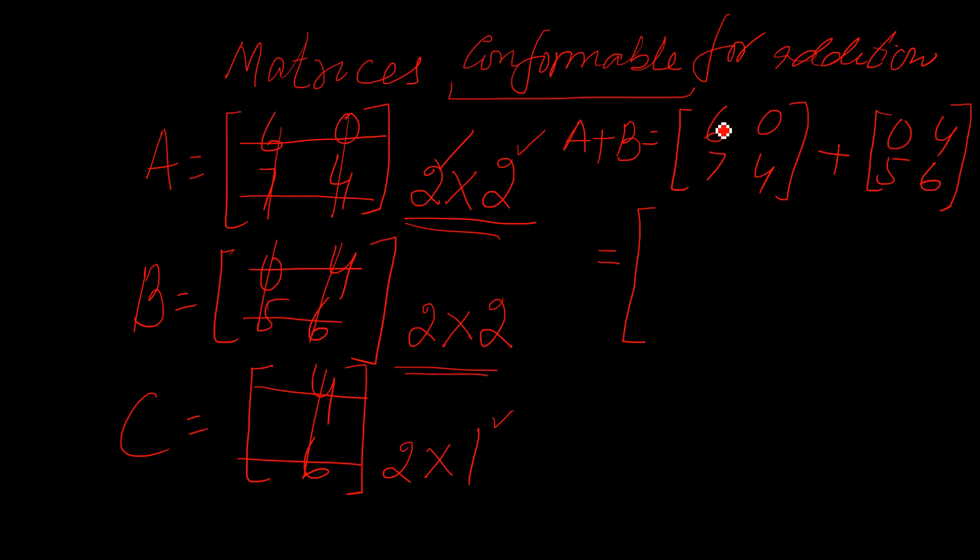Corresponding entries means this 6 is the first element of this matrix and 0 is the first element of the B matrix. So you have to add these two together. Then this 0 is the second entry, and this 4 is the second entry.